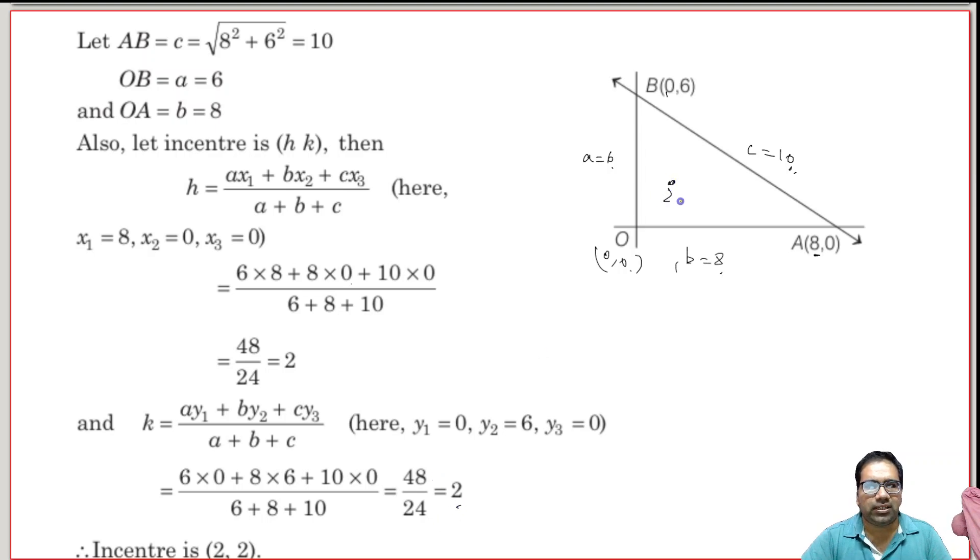So 2 comma 2, somewhere here. 2 comma 2 is actually the incentre. The incentre is the center of the circle which, if you draw the circle, it will touch all the three sides. That is incentre.